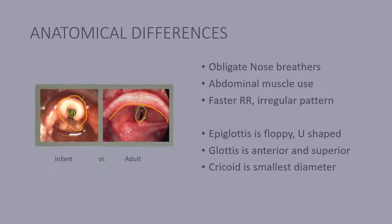Versus in the adult, the cords are the smallest diameter. So if an object can get through the cords, it can actually make it into the right or left mainstem bronchi and you can still ventilate through the other side, or it doesn't make it through the cords and it just gets stuck above it.